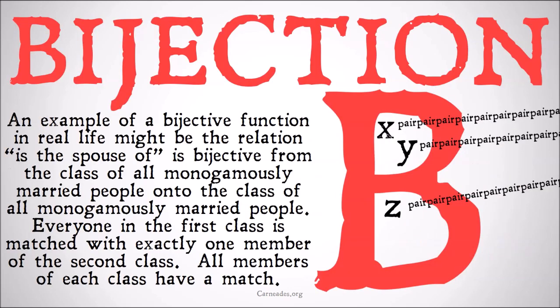An example of a bijective function in real life might be the relation 'is the spouse of,' which is bijective from the class of all monogamously married people onto the class of all monogamously married people. Everyone in the first class is matched with exactly one and only one member of the second class, and all members of the second class are matched with exactly one and only one member of the first class. All members of each class have exactly one and only one match.